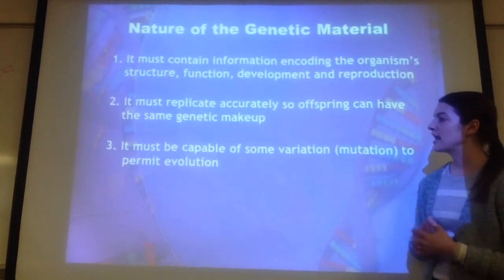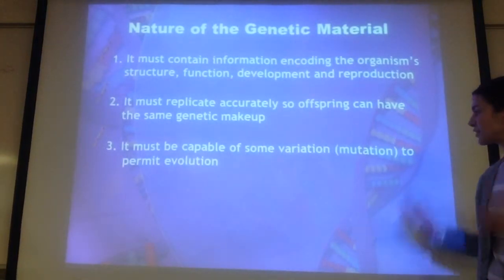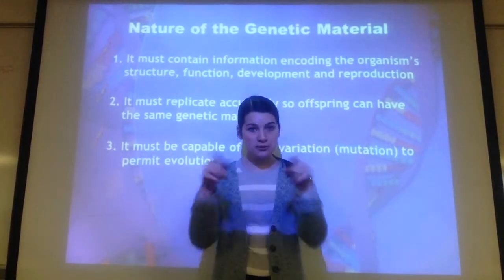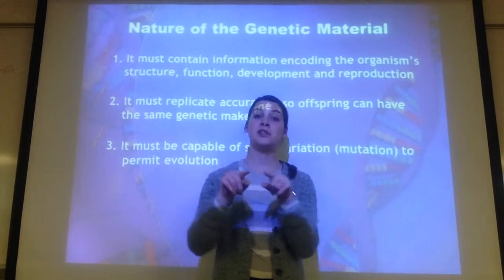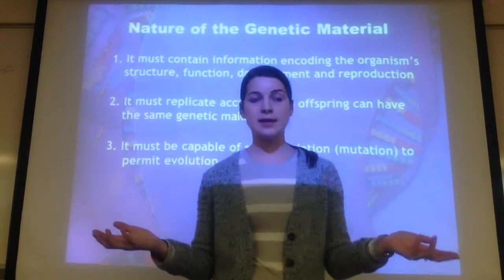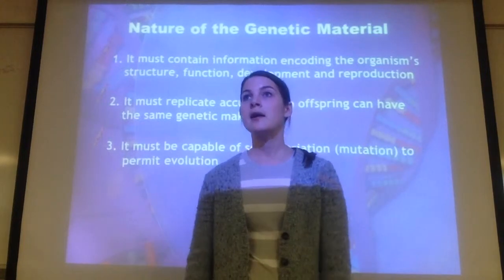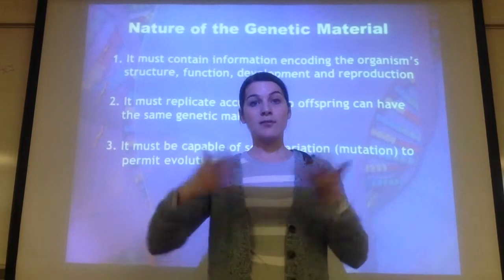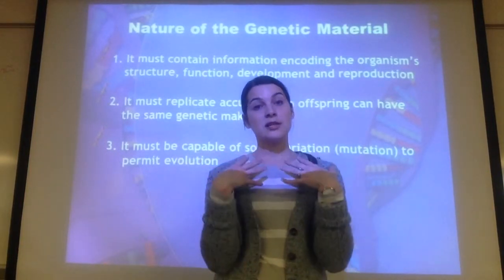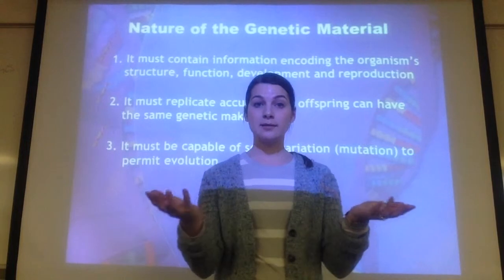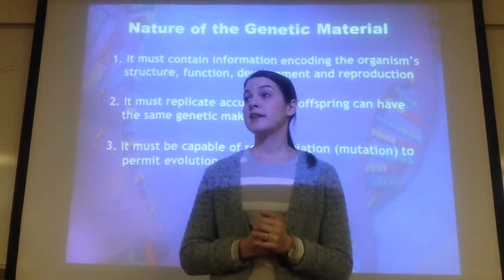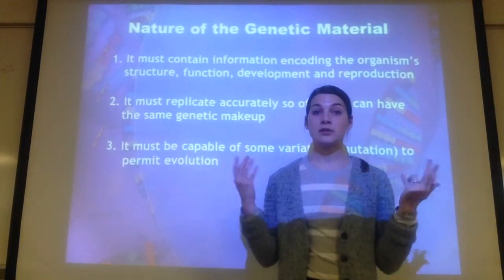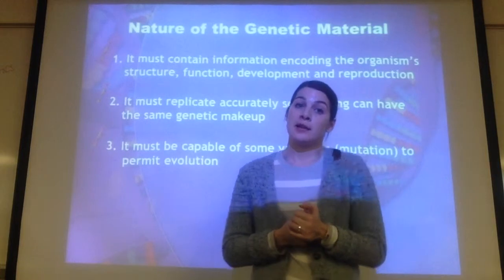Genetic material also has to be capable of having some variation — some sort of mutation. Due to the fact that mutations exist, you actually have mutations right now — mess-ups in your DNA. Usually most mistakes don't do anything serious. But because mutations exist, that is what allows evolution to occur, because changes in DNA change traits. Some traits are better than others; some allow organisms to live better and reproduce more, so those traits get passed on — and that's what evolution is, changing a species over time.